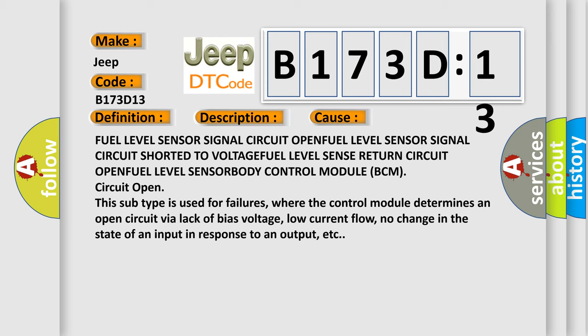This subtype is used for failures where the control module determines an open circuit via lack of bias voltage, low current flow, no change in the state of an input in response to an output, etc.